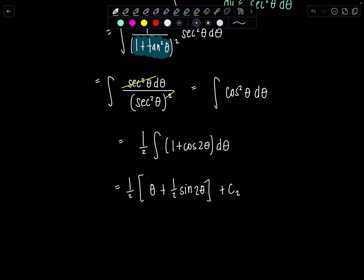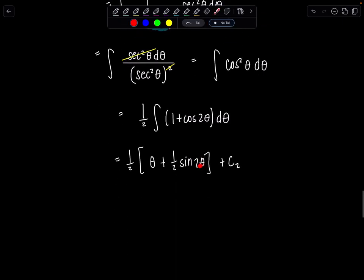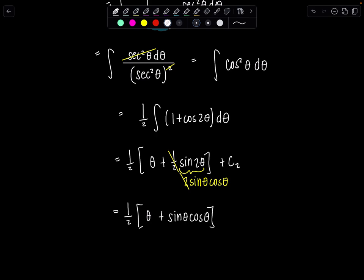Now we have to get back to u's. And so we're going to have to draw a triangle. When we draw a triangle, remember, it needs to be a triangle in terms of theta, not two theta. So yes, we need to bust out our double angle identity, two sine theta cosine theta. And that two and the one half will cancel. That's beautiful. So I've got one half times theta plus sine theta cosine theta plus c2.